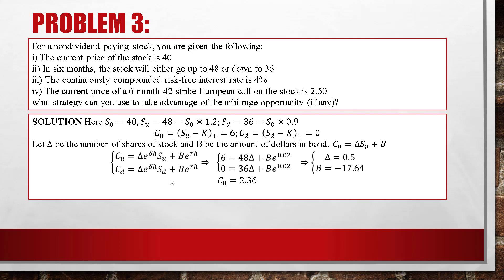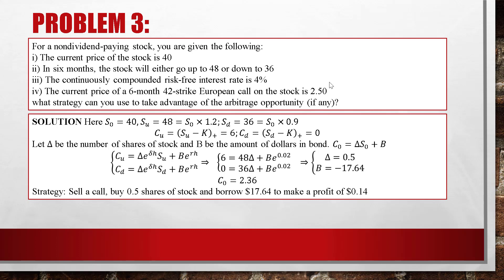The theoretical price is 2.36 but the market price is 2.50. By the rule — buy low, sell high — the theoretical replicating portfolio is cheaper, so we sell the overpriced call. We sell the call (at 2.50), buy 0.5 shares of stock, and borrow $17.64. The profit is the difference: 2.50 − 2.36 = $0.14.